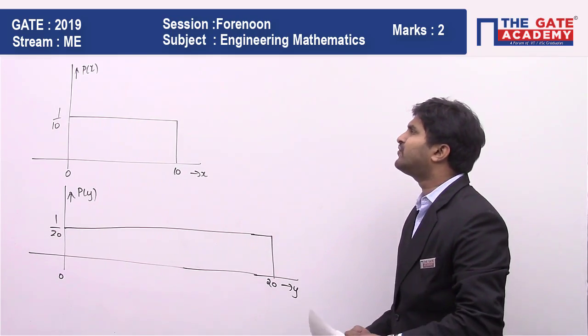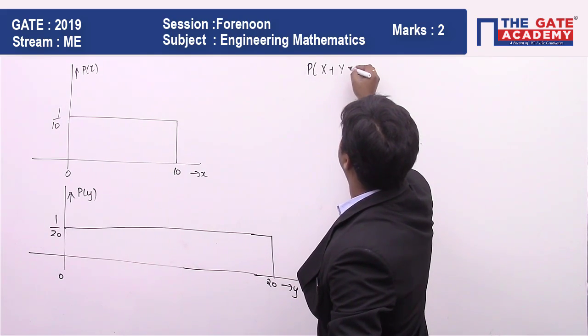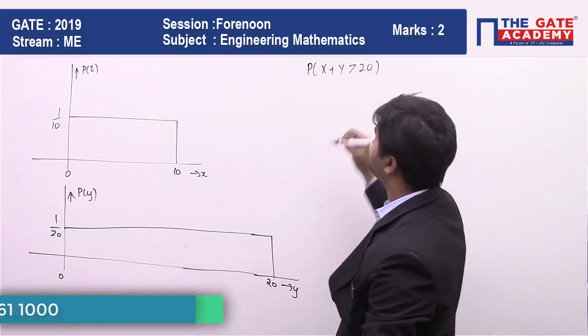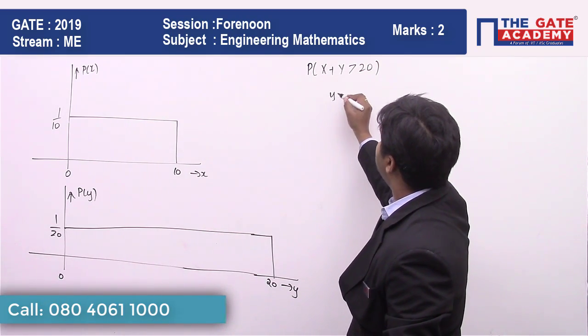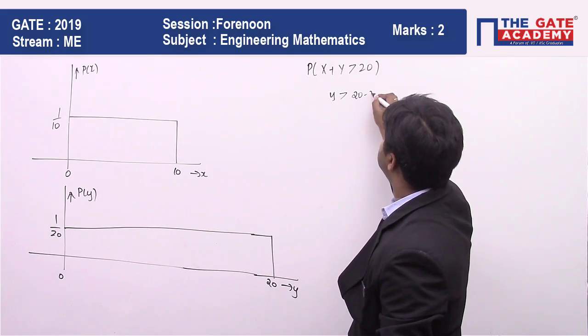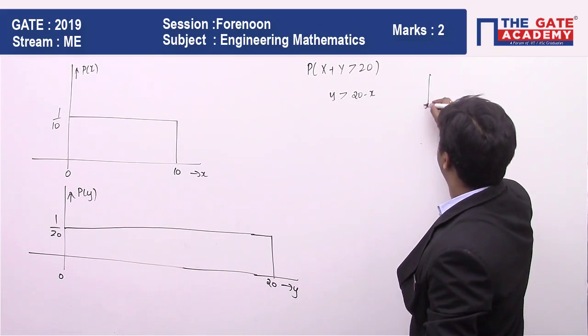So if that is the case, what we have to check is the probability that x plus y is going to be greater than 20. So you can see that the value of y should be greater than 20 minus x. I can solve this problem using the concept of joint probability distribution.